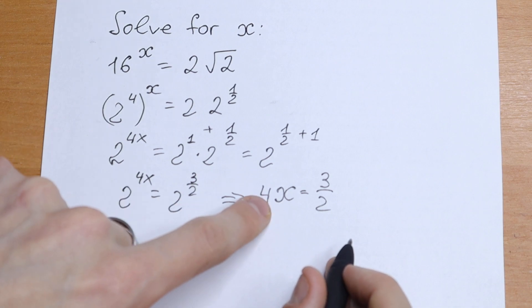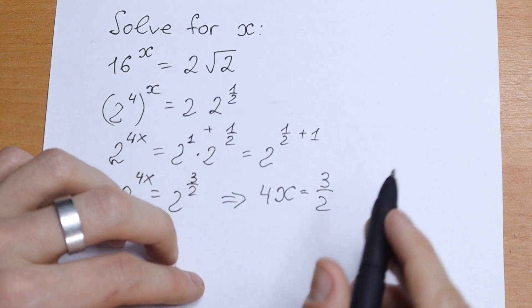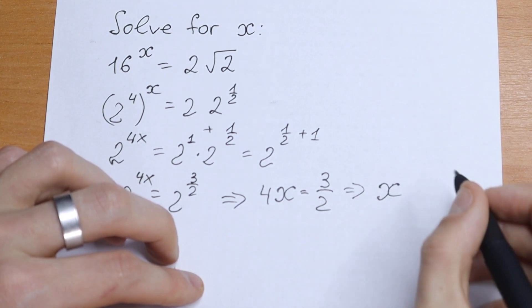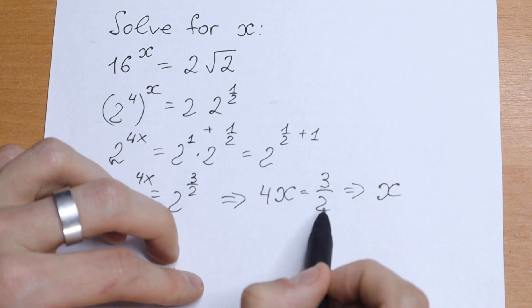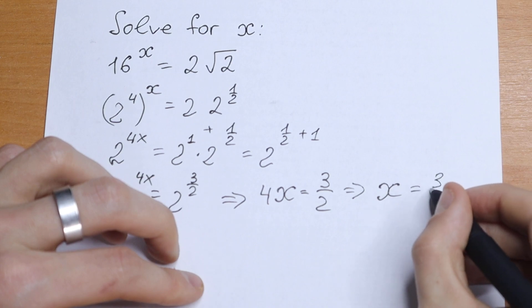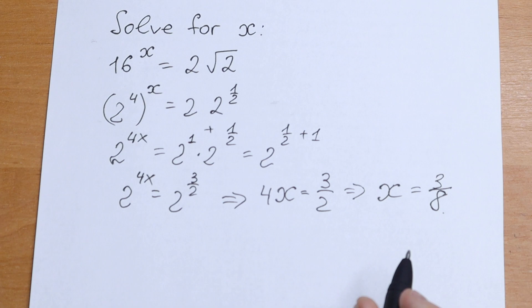How can we find x from here? Just dividing by 4 both sides. We will have only our x on the right. And if we divide both sides by 4, we will have not 3 half but 3 divided by 2 times 4. We will have 3 over 8. And this will be our answer to this equation.